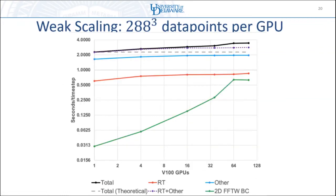For weak scaling, which we care about more, the y-axis shows time in seconds per time step — perfect scaling is a flat line — scaling from one to 96 GPUs. Each time we add a GPU we also add another 288-cubed piece of data, keeping grid points per GPU consistent. RT stands out slightly but is mostly flat. The rest of the code scales well. The CPU FFT performance is poor, but that's a CPU library running with GPU code and is being fixed.